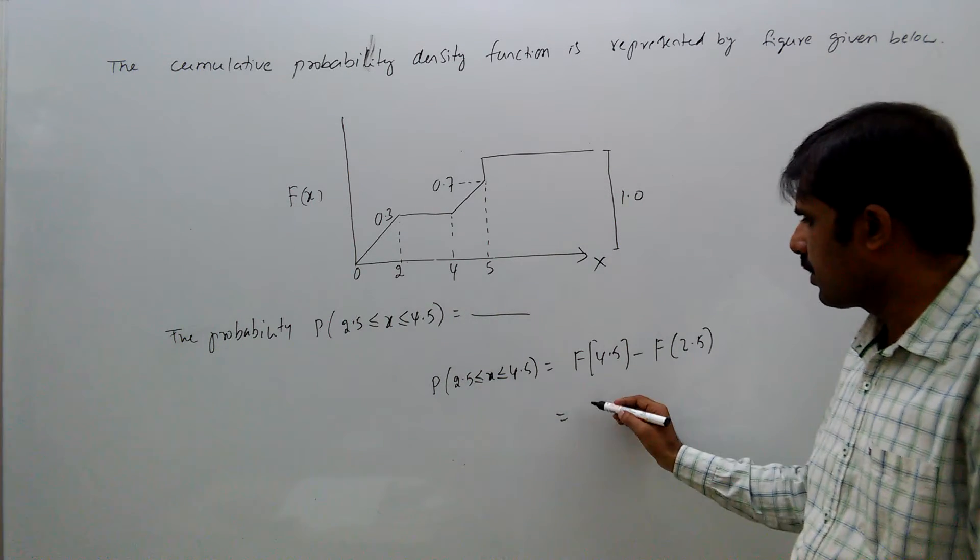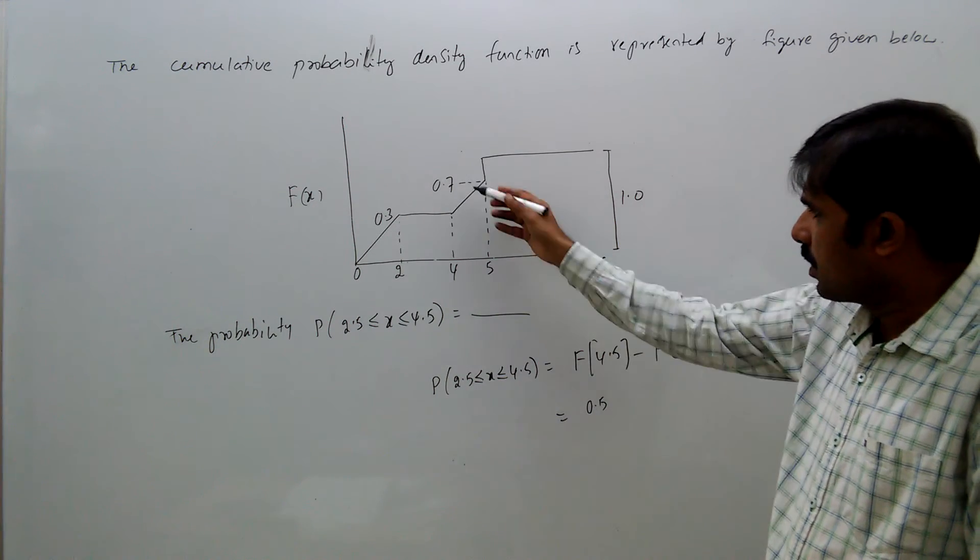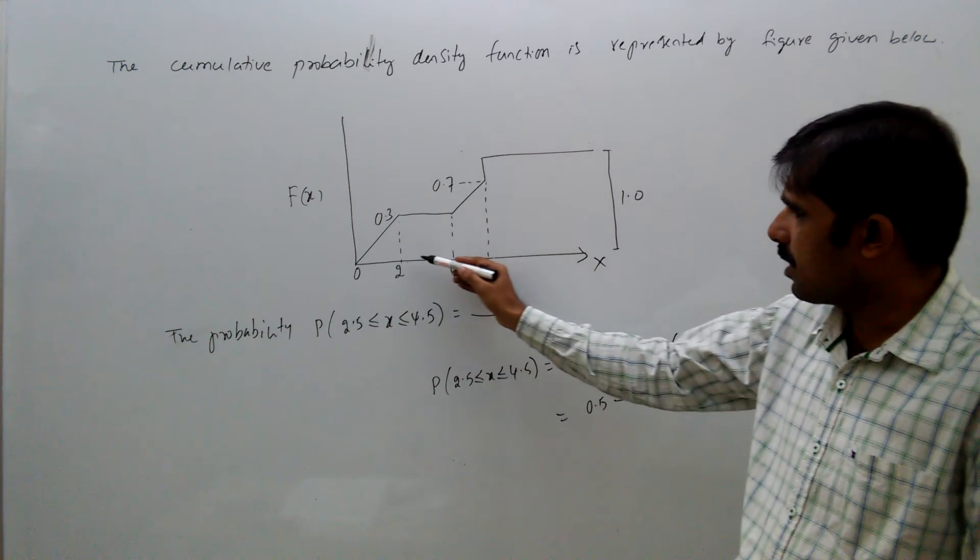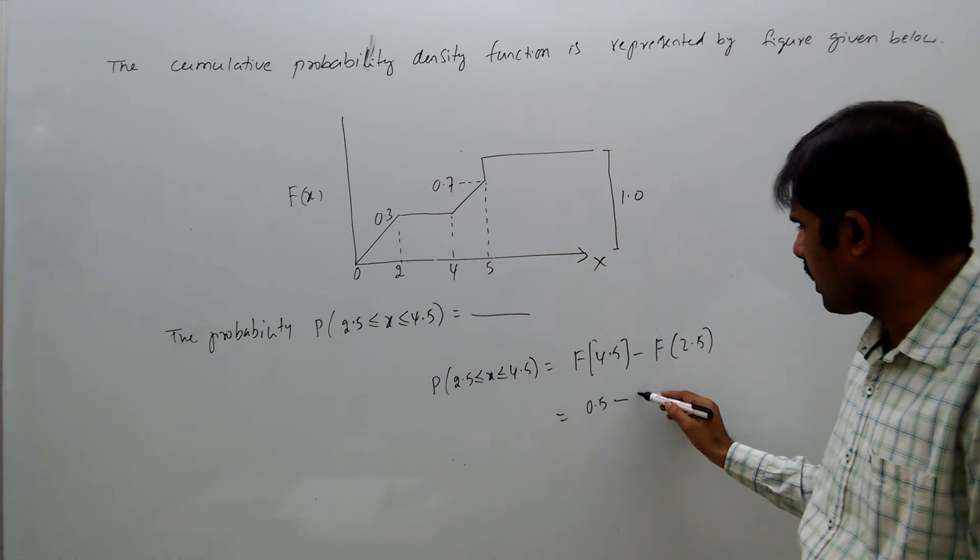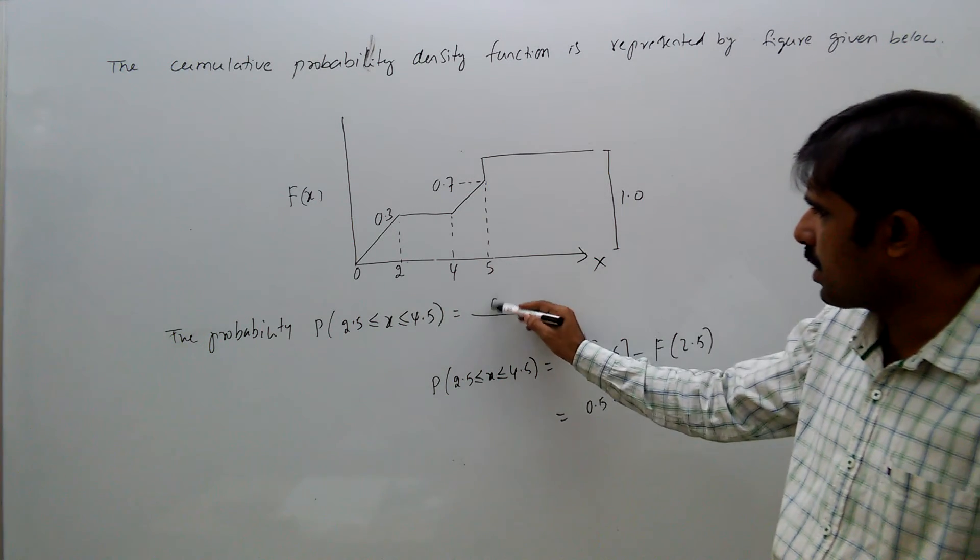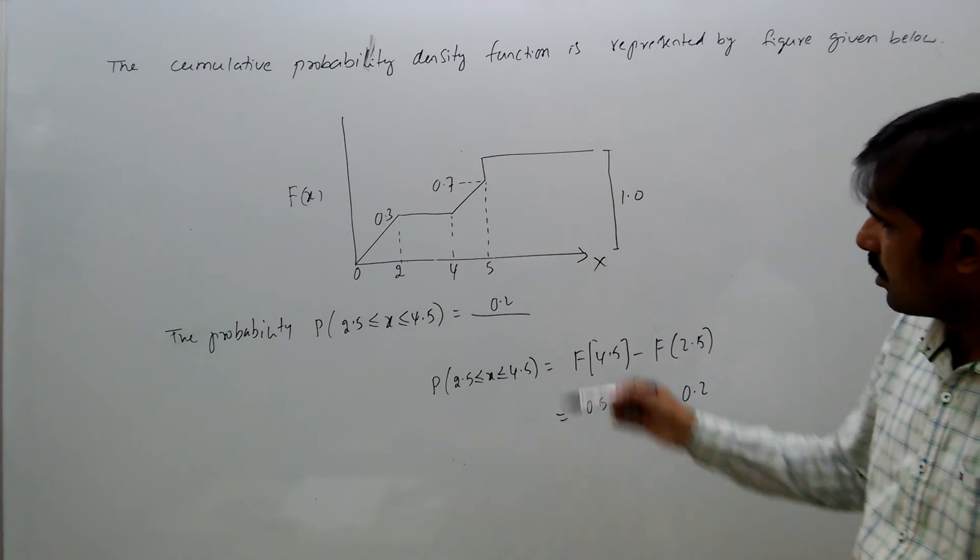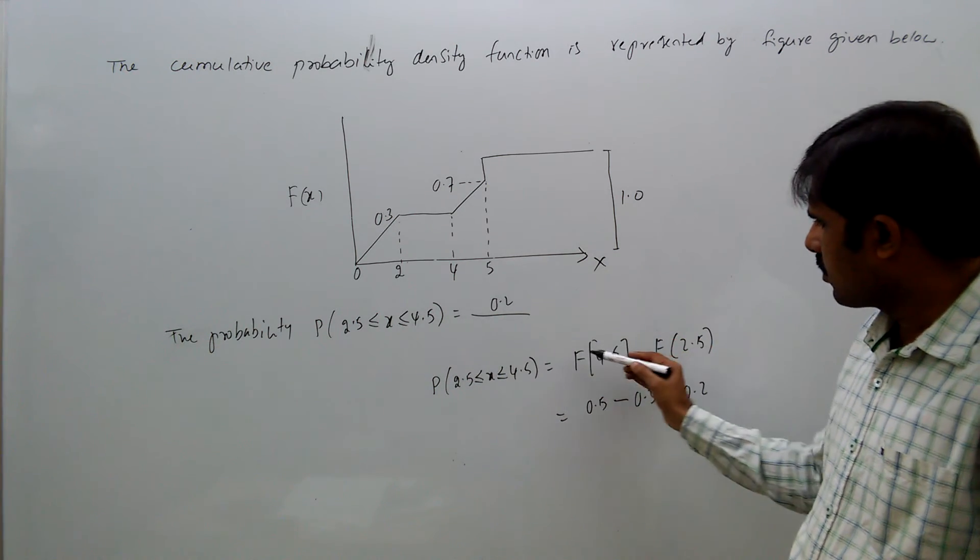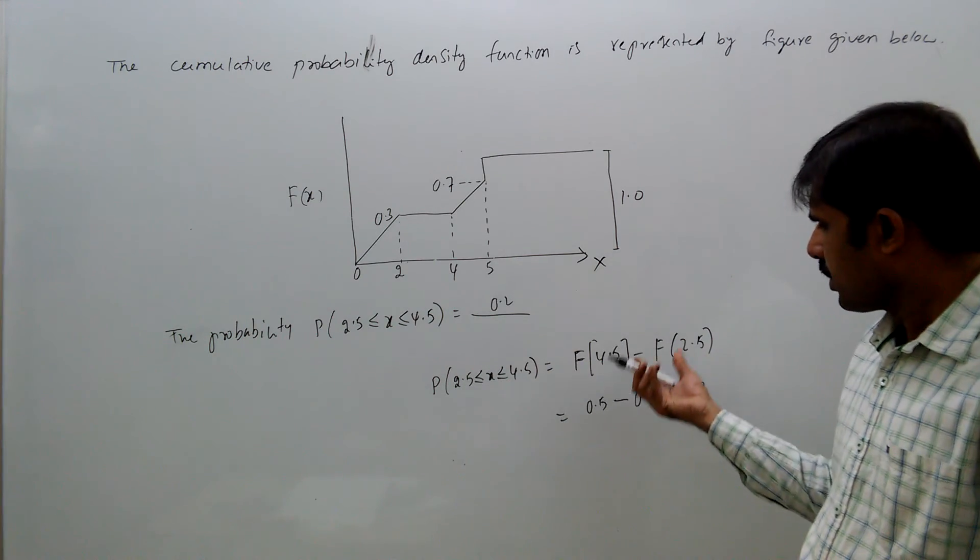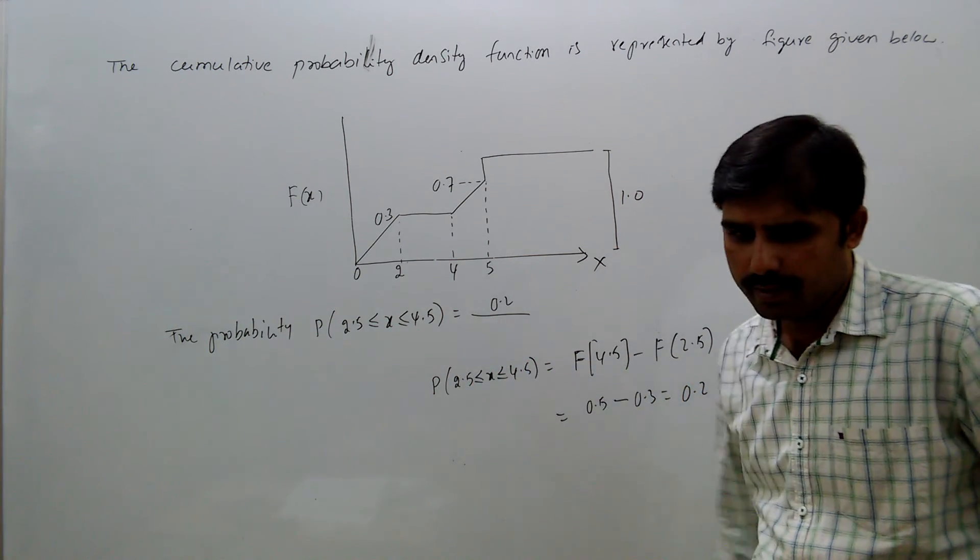So 4.5 means the average of that, which is 0.5, because 0.3 and 0.7 average is 0.5. Minus f of 2.5, which is 0.3 only, that equals 0.2. So the probability is 0.2. This is the formula: cumulative function at 4.5 minus cumulative function at 2.5 gives you the probability in between 4.5 and 2.5.